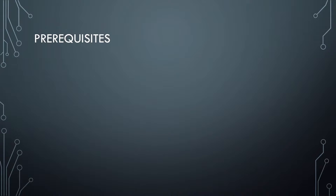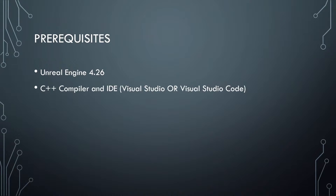There are going to be some prerequisites for the project. First you're going to need Unreal Engine — for this series we're going to be using Unreal Engine 4.26. The next thing you need is a C++ compiler and a development environment. It could be Visual Studio Community or Express version, or you could use Visual Studio Code as your preferred environment.